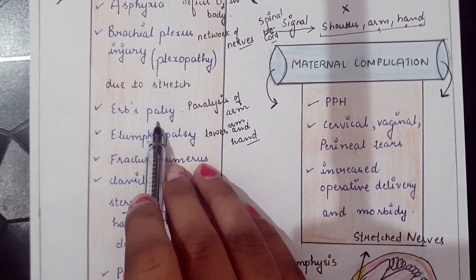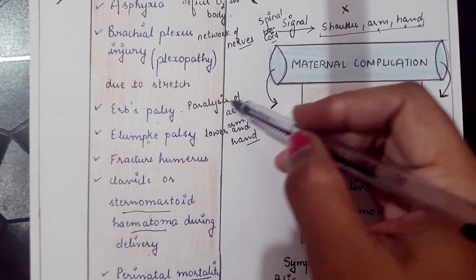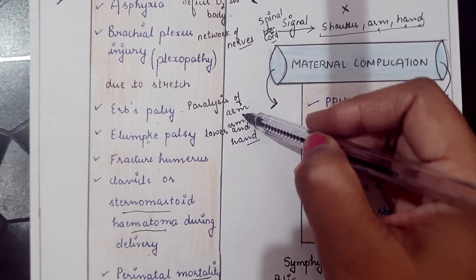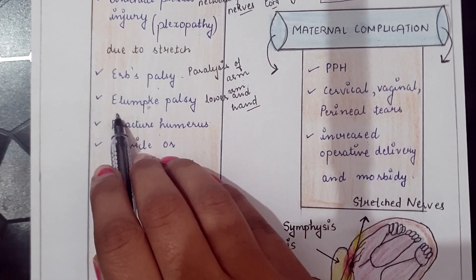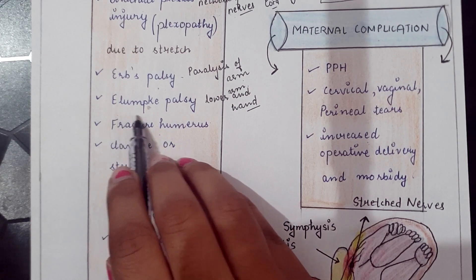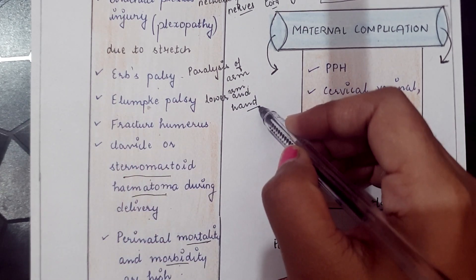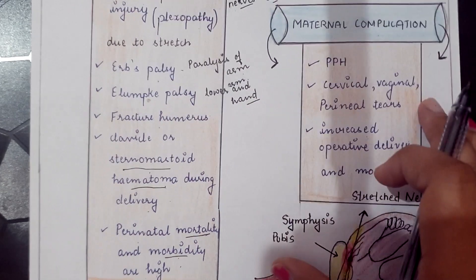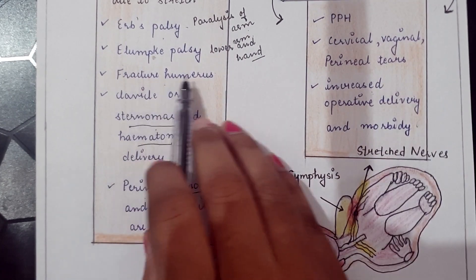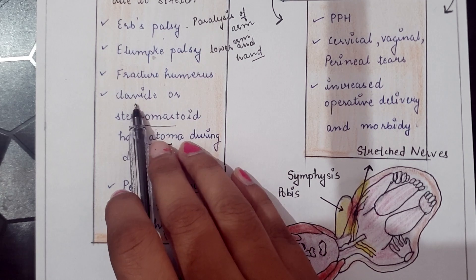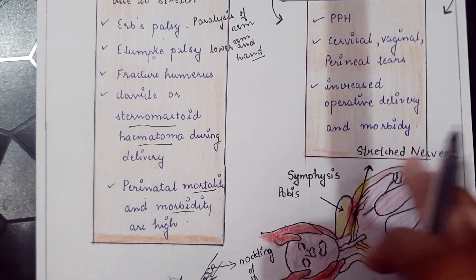Erb's palsy results from injury to the nerves, causing paralysis of the arm. Klumpke's palsy affects the lower arm and hand due to injured nerves.